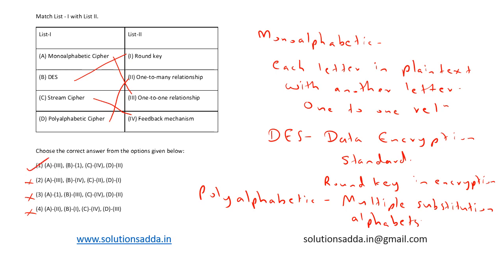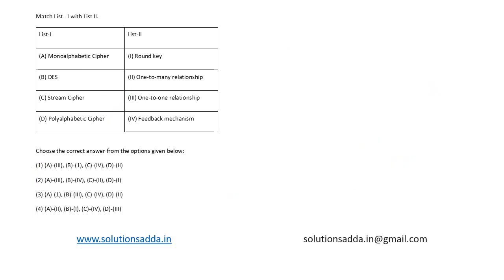So from the options we can say: A is mapped to three, B is mapped to one, C is mapped to four, and D is mapped to two. This option is the correct answer for this cryptography question.